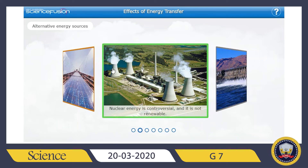Next we have nuclear energy, which is controversial. First, it is also not renewable — we are using a type of mineral called uranium, which is a limited resource. Nuclear energy is the energy released from splitting the nuclei of a radioactive atom such as uranium. Since minerals like uranium can't be replaced, that's why it is called non-renewable. Also, nuclear power plants produce harmful radioactive waste that must be safely stored for thousands of years.